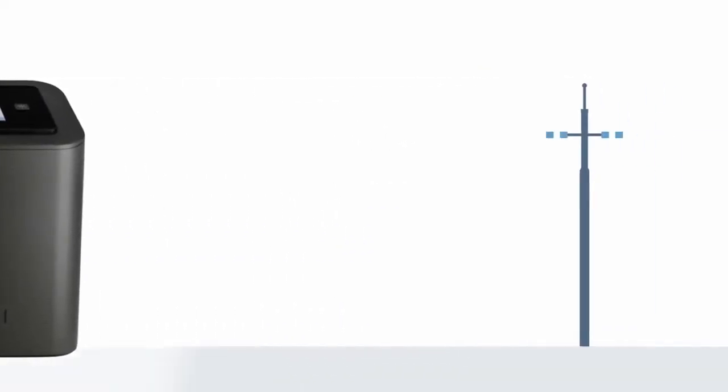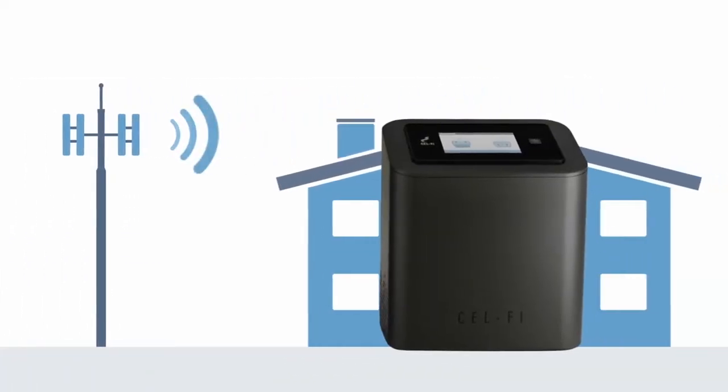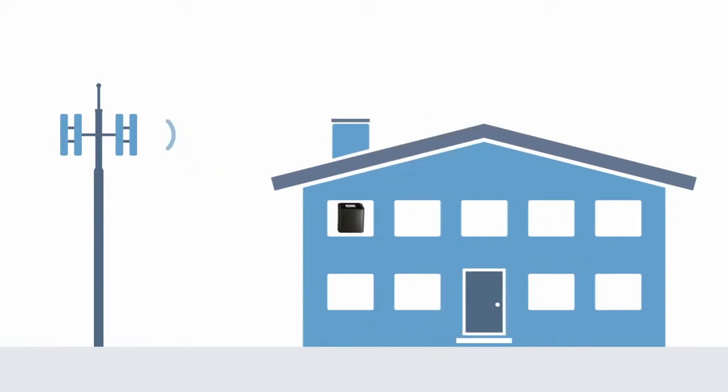Start with the Network Unit. The Network Unit collects signal from the mobile network and transmits it to the coverage unit where it is amplified in your building.